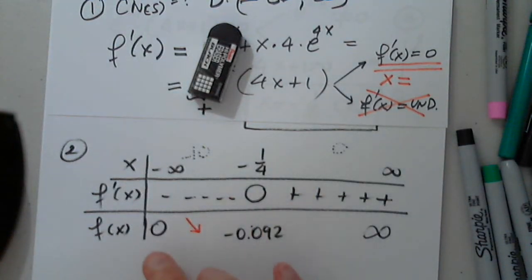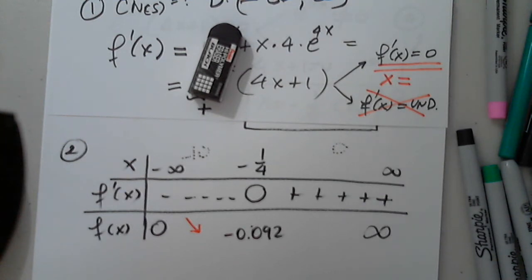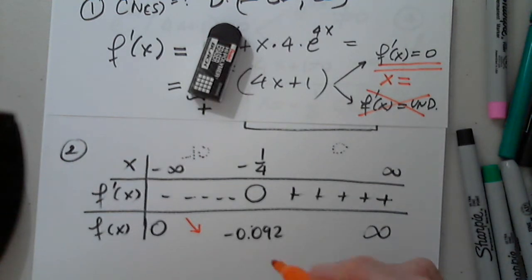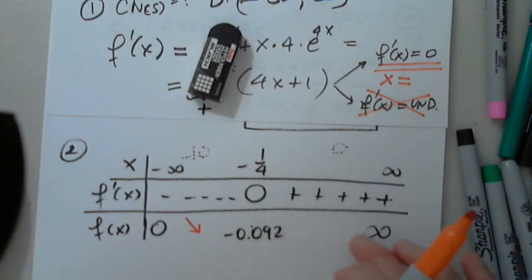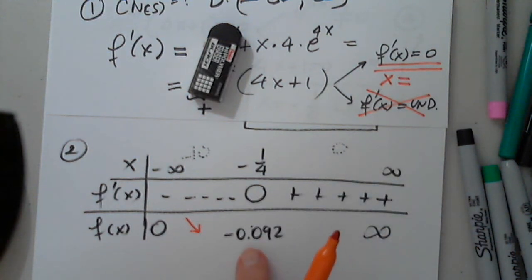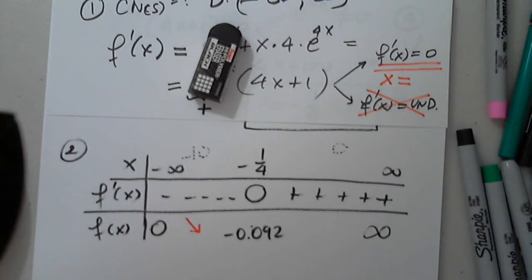We have to check if the function is decreasing from zero to this point. From zero to a negative number, the function is decreasing. Now, when the first derivative is positive, what should the function do? Increase. Is it increasing from negative 0.1 roughly to infinity? Yes, absolutely.